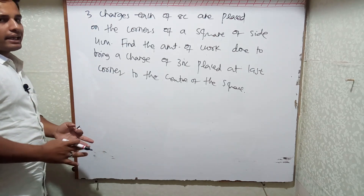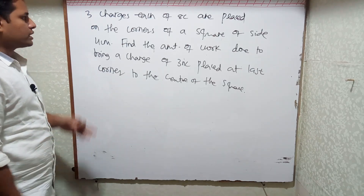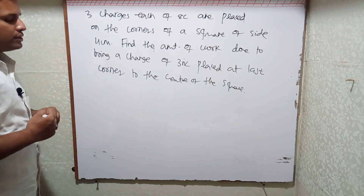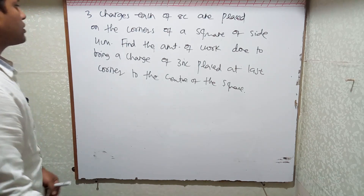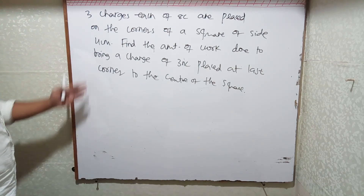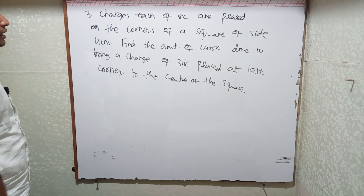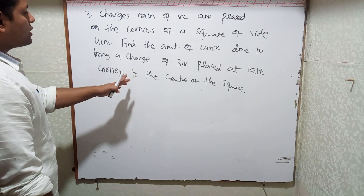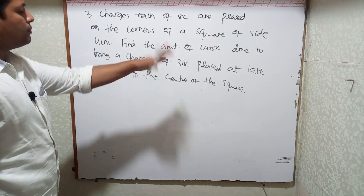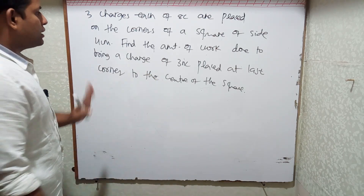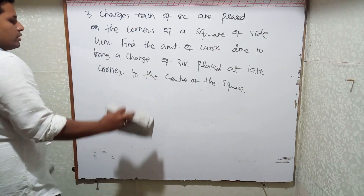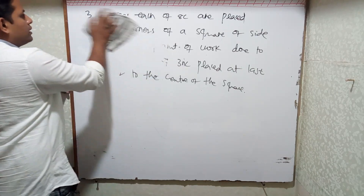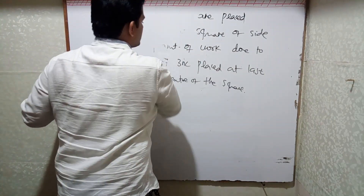Three charges each of 8 coulombs are placed on the corners of a square of side 4 centimeters. Find the amount of work done to bring a charge of 3 nanocoulombs placed at the last corner to the center of the square. Now I'll rub this off and we'll start solving.